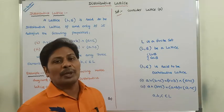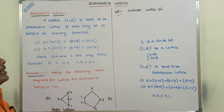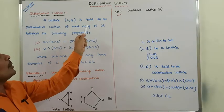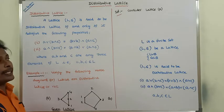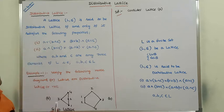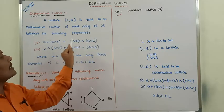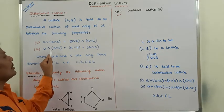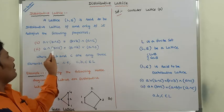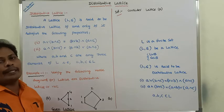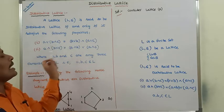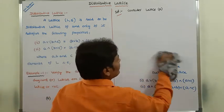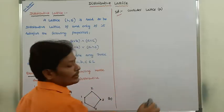So this is the definition of distributive lattice. (L, ≤) is said to be a distributive lattice if and only if it satisfies the following properties. First: A join (B meet C) = (A join B) meet (A join C). Second: A meet (B join C) = (A meet B) join (A meet C), where A, B, C are elements of set L. Hence we can say that lattice L is said to be a distributive lattice because it satisfies these two properties.